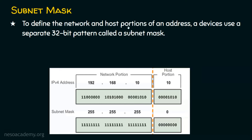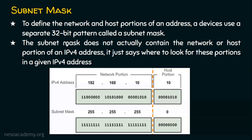To define the network and host portions of an IP address, a device uses a separate 32-bit pattern called the subnet mask. The subnet mask does not actually contain the network or host information itself — it just indicates where to look for these portions in a given IPv4 address. With the IP address alone we can determine what the network portion and host portion are.